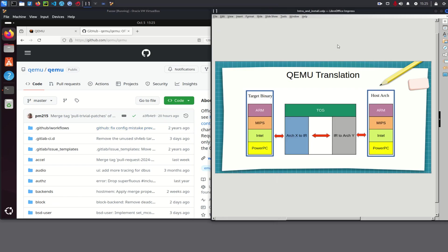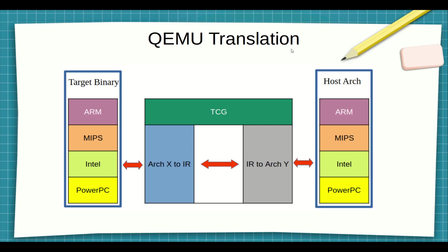How does QEMU do this translation? When QEMU receives a binary from one architecture, it tries to translate it into instructions for the architecture where QEMU is running on. However, instead of directly translating from one specific architecture to another — for example from ARM to Intel or ARM to PowerPC — QEMU uses a module called TCG, or Tiny Code Generator, to translate the targeted architecture into what is called an Intermediate Representation, which is architecture-agnostic.